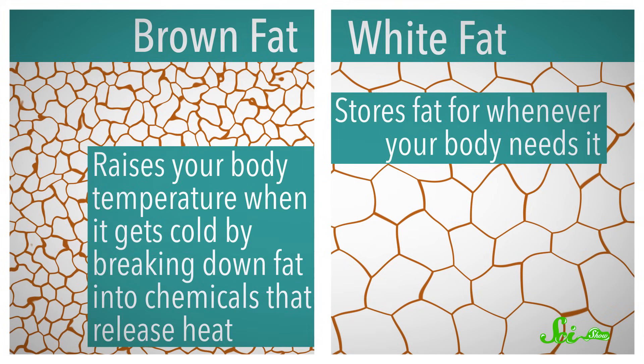They're not supposed to store fat. They're supposed to burn it. Brown fat raises your body temperature when it gets cold by breaking down fat into chemicals that release heat. They can do that because they're packed with mitochondria, which are brown, and that's why they're called brown fat cells.